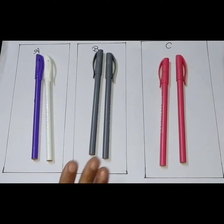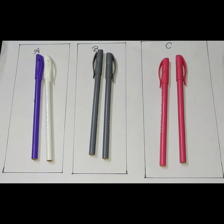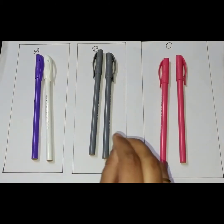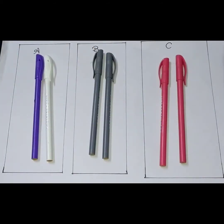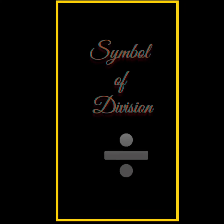So in this way, children, division means equal sharing or equal distribution. You can take any example, like if you have candies and you want to distribute them to your friends on a birthday, you distribute those candies equally among each student. This is what we call division. This is the symbol of division.